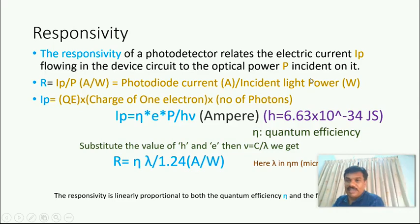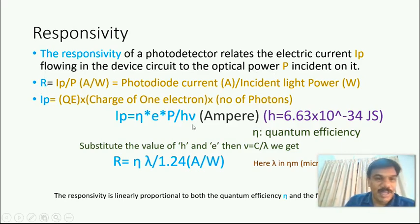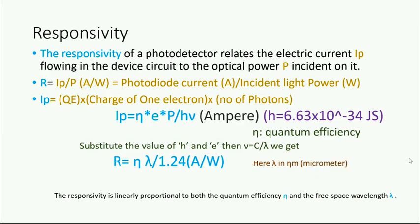Responsivity is the photodiode electrical current, that is photo current, flowing through the device corresponding to the optical power incident on it. In notation we can write R is the responsivity and you can see Ip is the photo current, P is the photo light power incident on the photodiode. So ampere per watt - photodiode current in ampere divided by incident light power in watt.